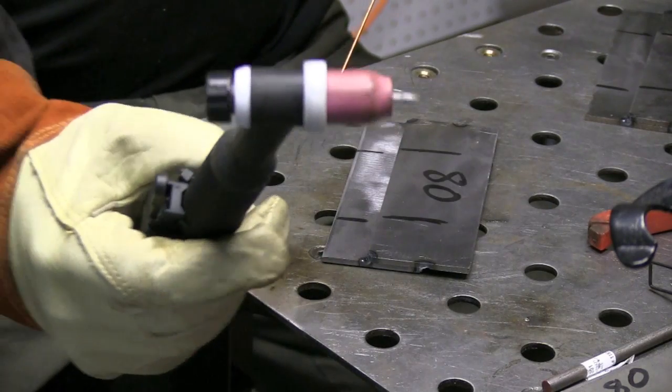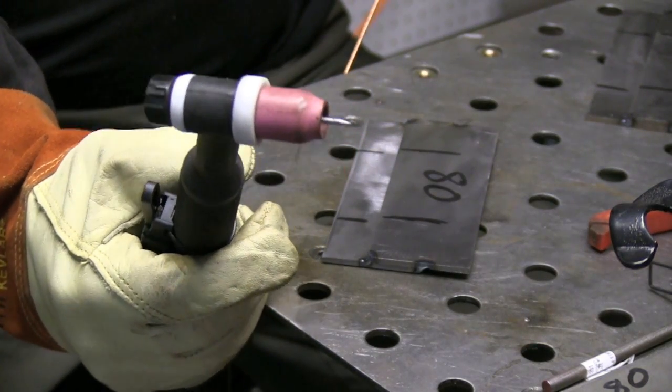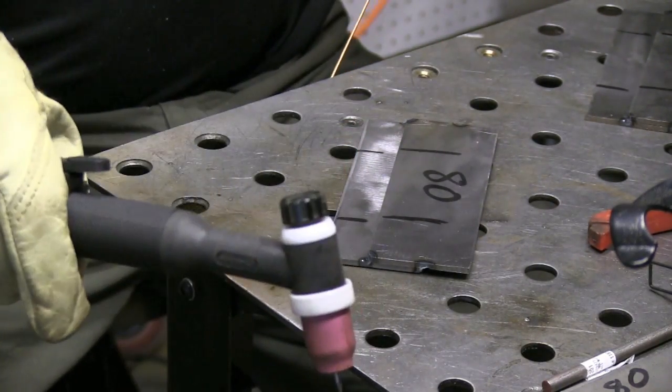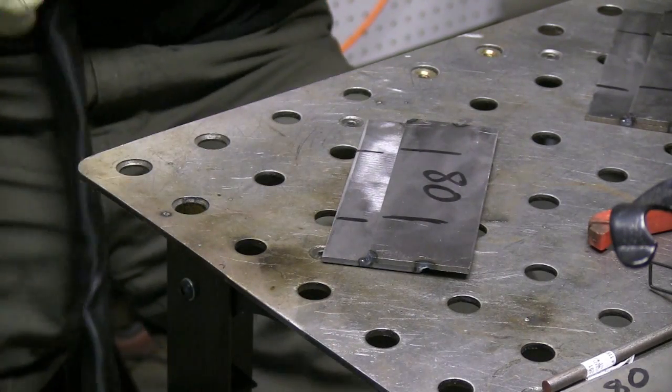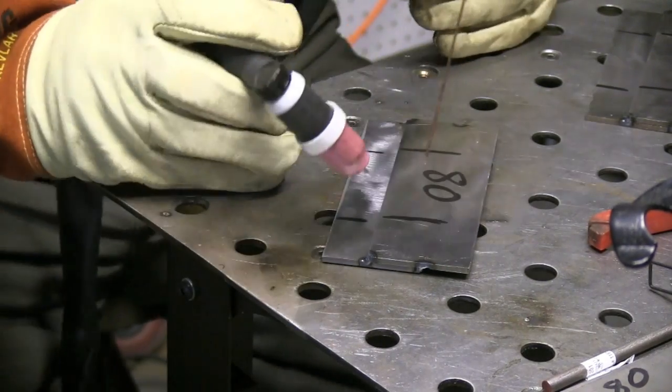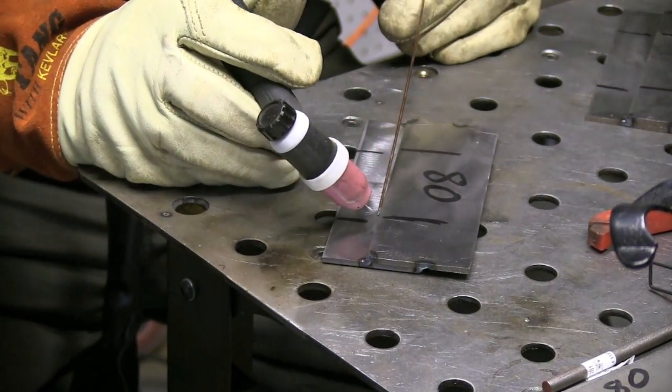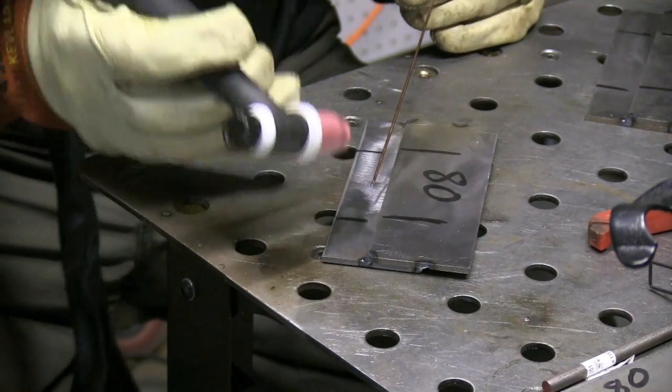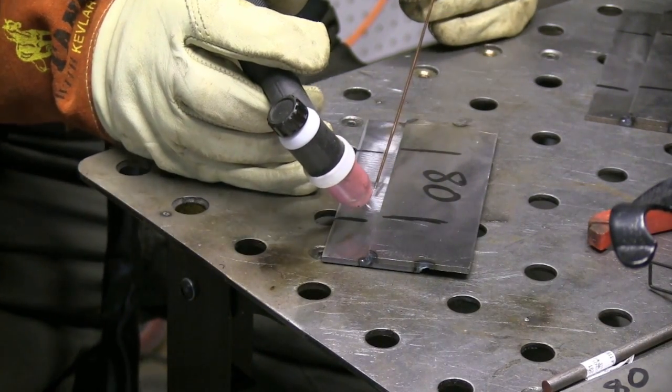I'm starting here, the first one at 80 amps, using this big old 26 air-cooled torch with a stubby gas lens on it, and I'm using 1/16th, that's 1.6mm filler wire, and I'm going to use that throughout to keep everything the same.